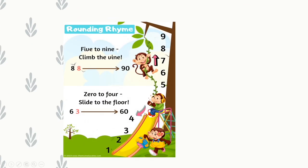Let us learn the rounding concept with a rhyme: '5 to 9, climb the vine. 0 to 4, slide to the floor.' If the number lies between 5 and 9, we round upwards. If between 0 and 4, we round downwards. For 88, since 8 lies between 5–9, we round up: 88 → 90. For 63, since 3 lies between 0–4, we round down: 63 → 60.